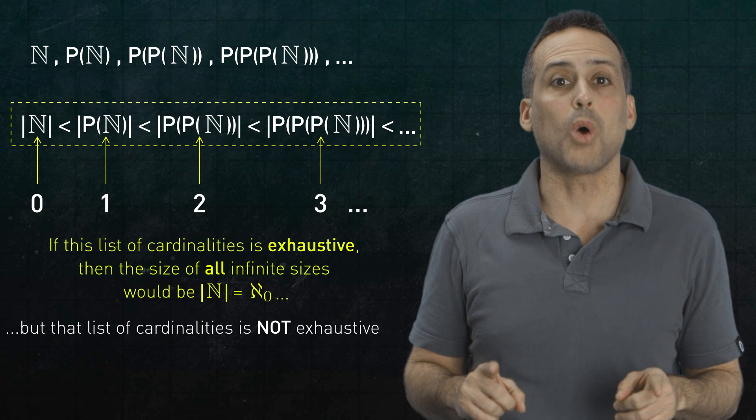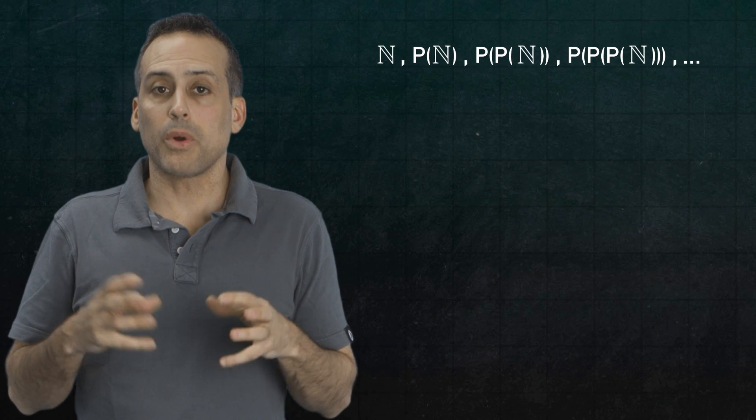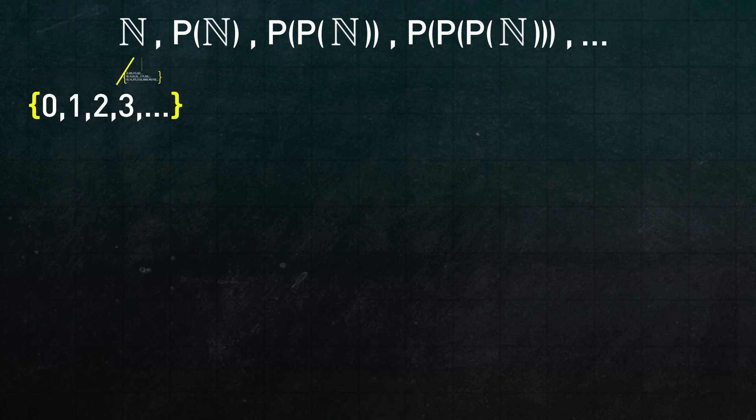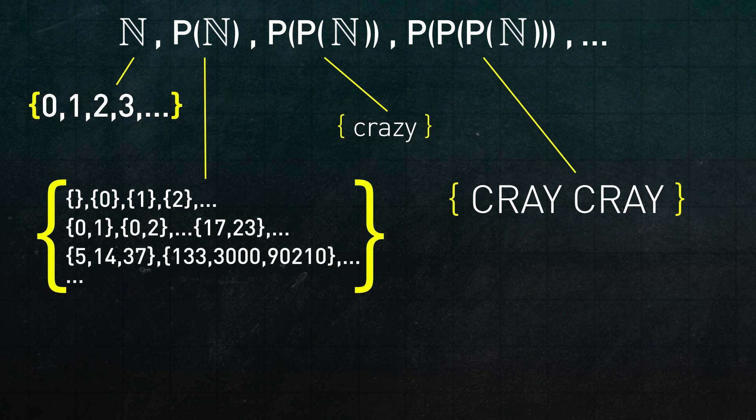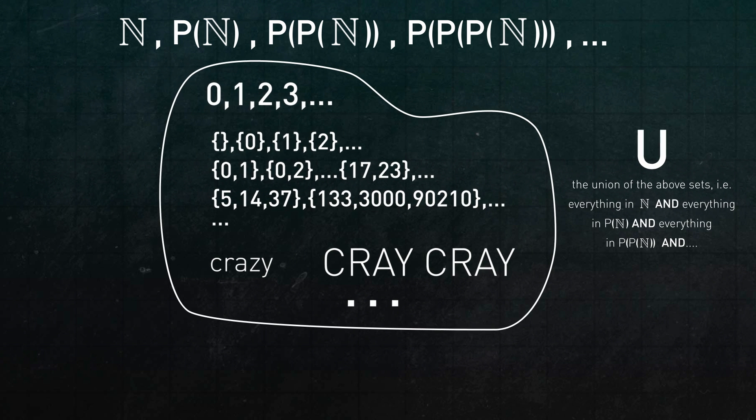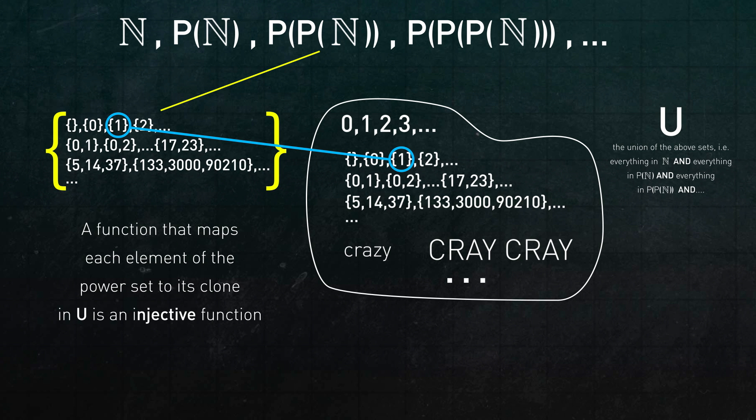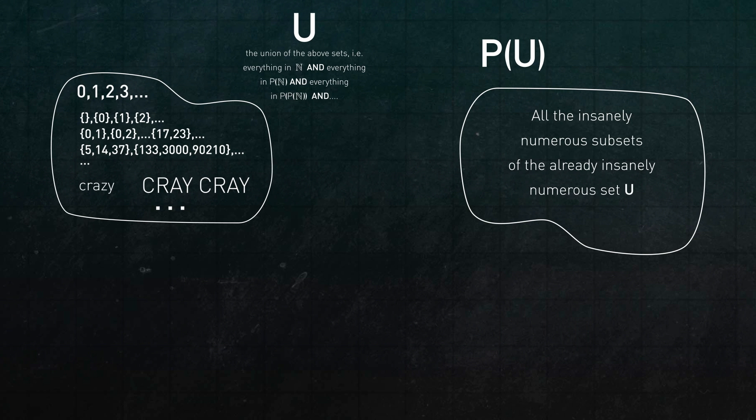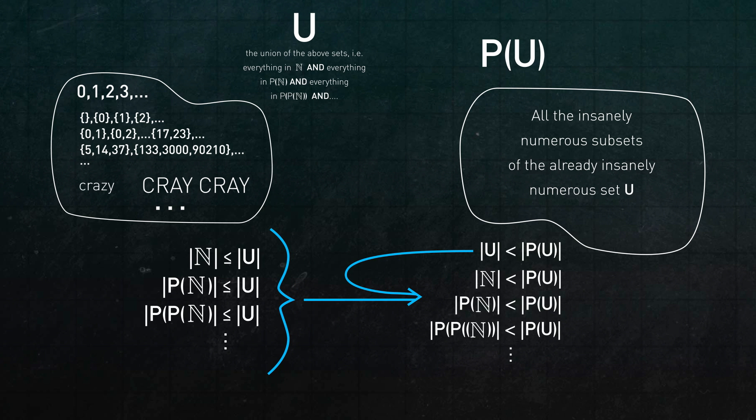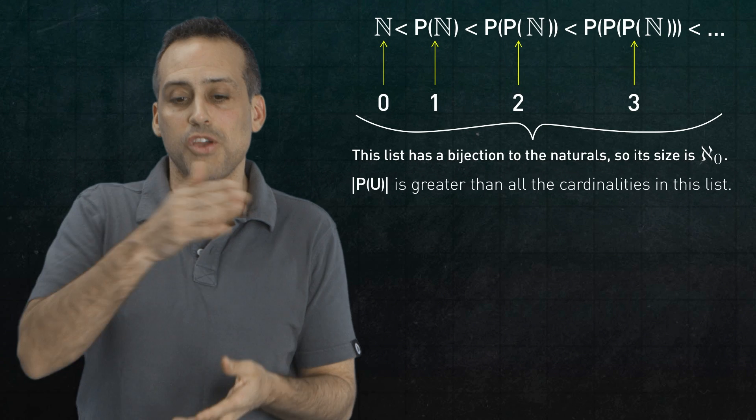Let's go back to the original list of sets, not the sizes, the sets. And let's form their union, U. In other words, I want to take all the elements of the set N, all the elements from the set P of N, and from P of P of N, et cetera. And I want to aggregate all those elements into one big set, U. Now there has to be an injective map from any of the power sets in the chain into U. Just send each element of that power set to its clone in U. That means that the cardinality of U has to be greater than or equal to the cardinality of any of the power sets that were in the chain. But now think about the power set of U itself. That's also an infinite set. So by our earlier theorem, the cardinality of that has to be strictly greater than the cardinality of U. Which means by extension, it's greater than the cardinality of any of the original sets in our chain. And that means that there's at least one infinite cardinality, the size of the power set of U, that our original list missed.